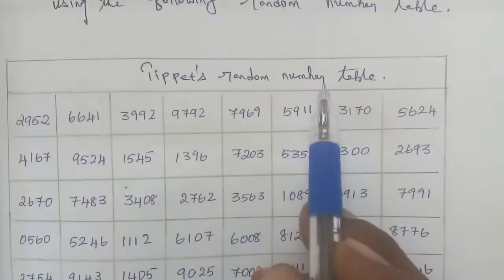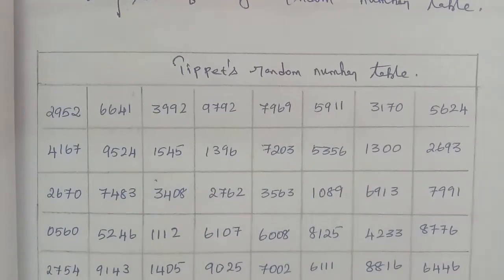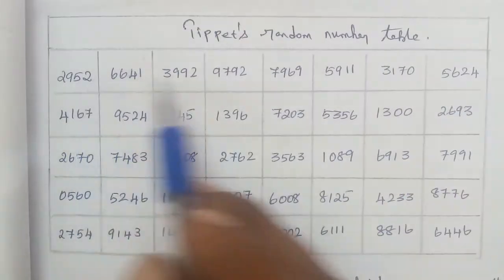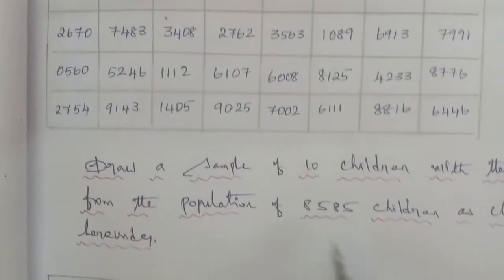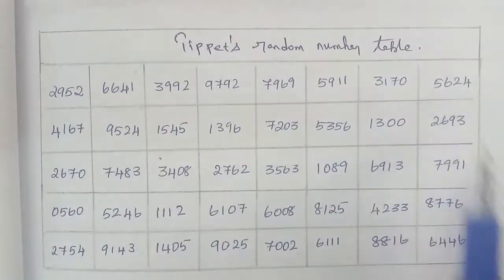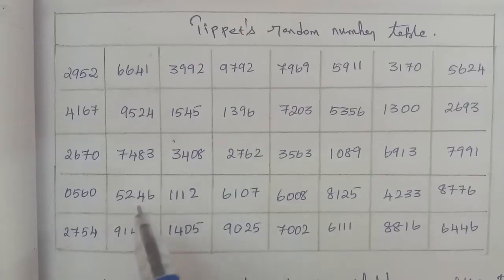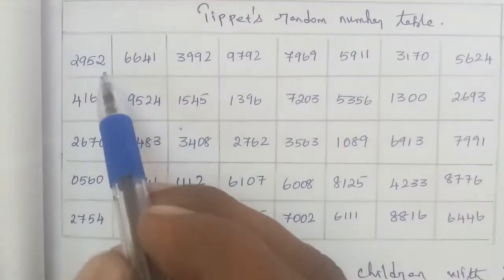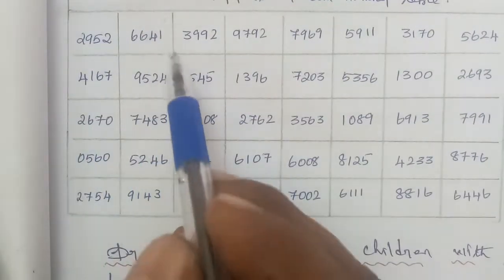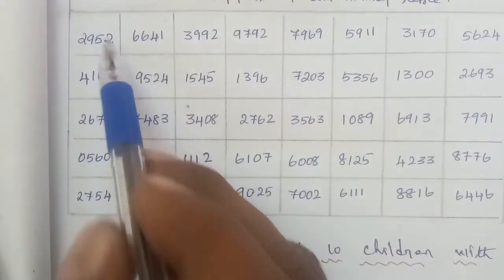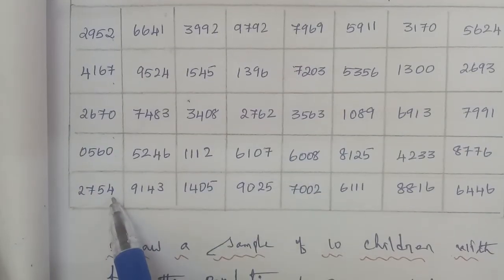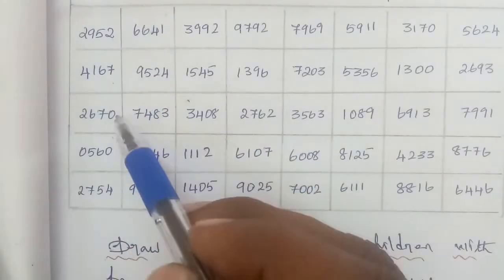Now I will choose from the random number table. As the population is 8585, numbers will be chosen up to 8585. From the textbook random number table, the numbers selected are: 2952, 4167. Then 2670, 0560, and 2754 are selected. So far, that is 5 numbers selected out of 10.